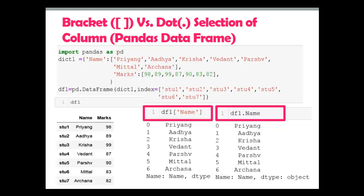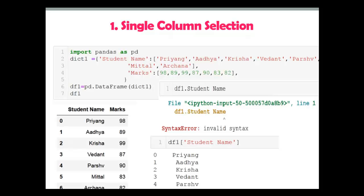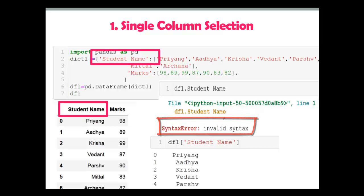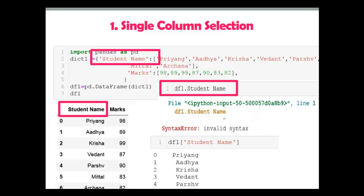For the first example, I want to select only one column of the pandas DataFrame, but watch carefully — the column label 'student name' contains a space in between. If we try to use dot notation it will generate a syntax error. So for that we have to use bracket notation; there is no other option.